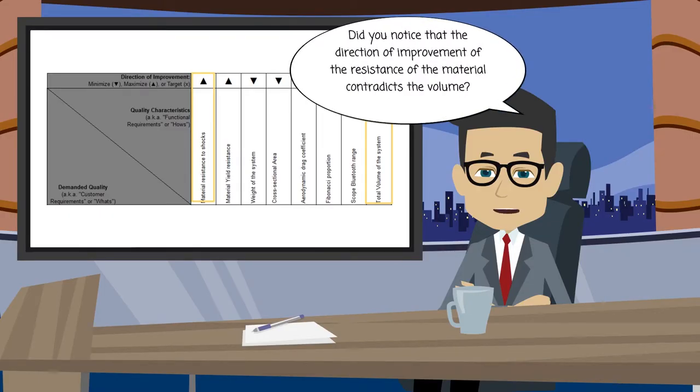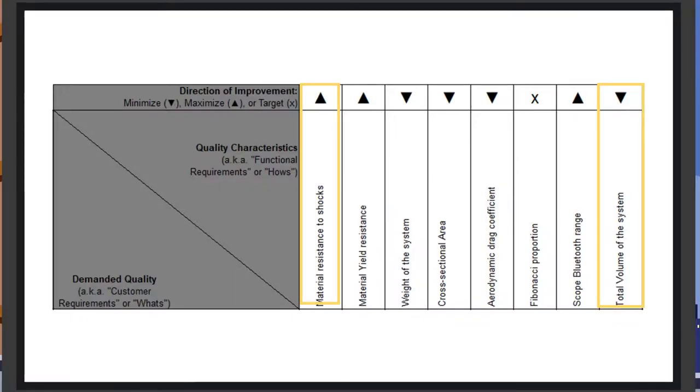Did you notice that the direction of improvement of the resistance of the material contradicts the volume? It's important to explain that some technical variables' direction of improvement makes them contradict.